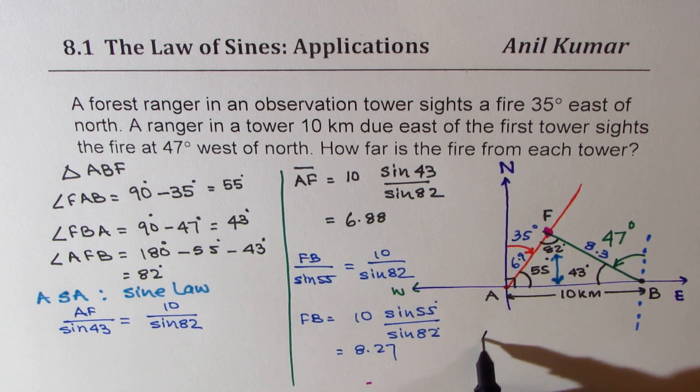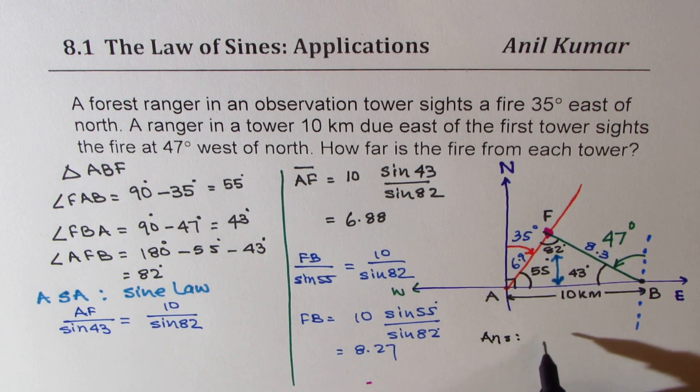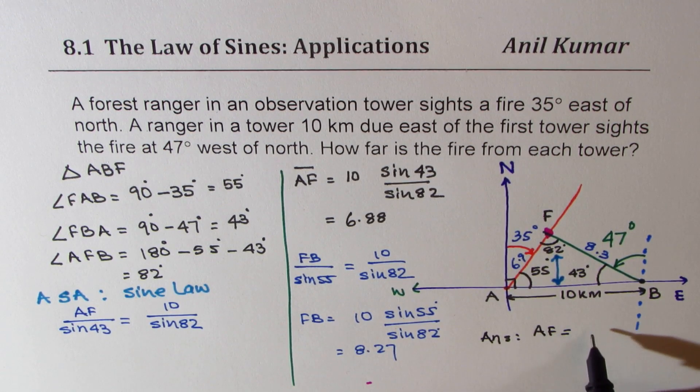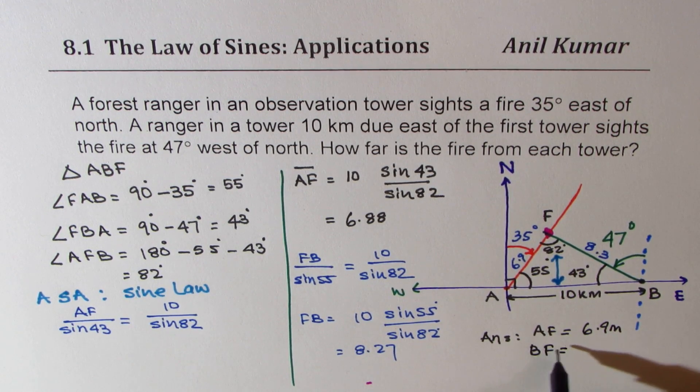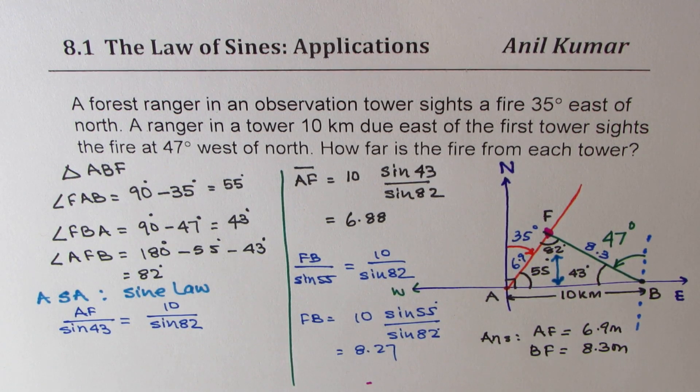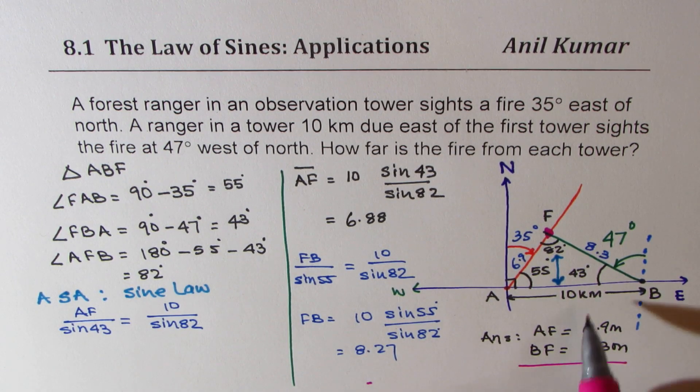So you can now write down your answer, which is A to F, from the first tower the distance is 6.9 kilometers and from the other tower to the fire it is 8.3 kilometers. So I hope you also understand how we checked our answer.